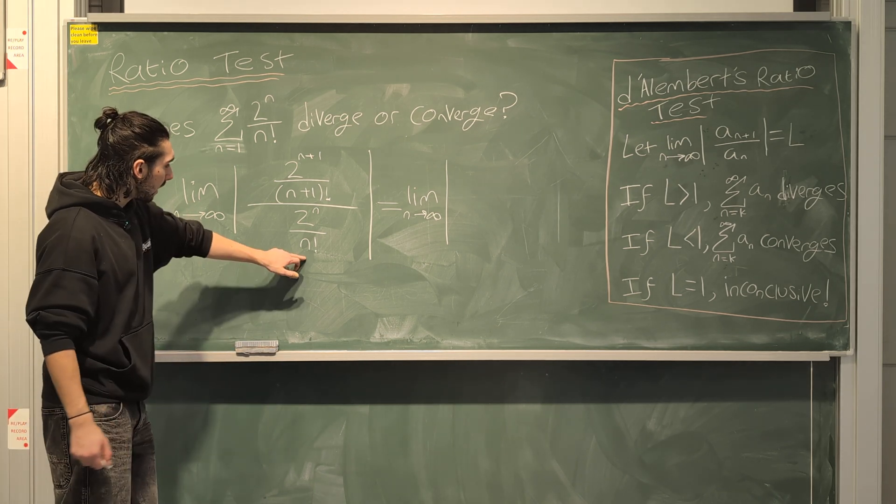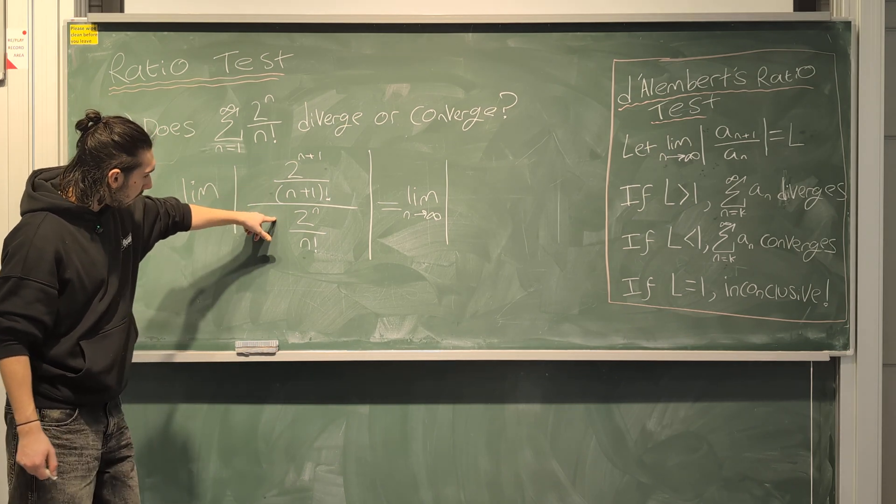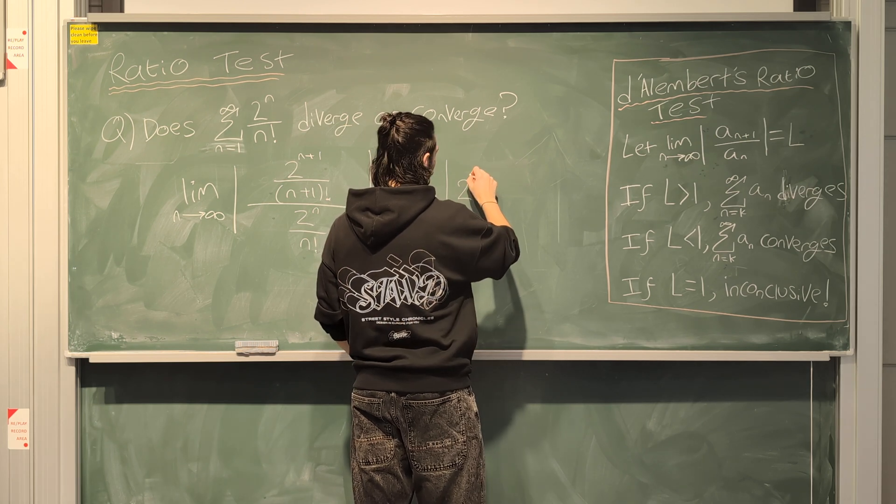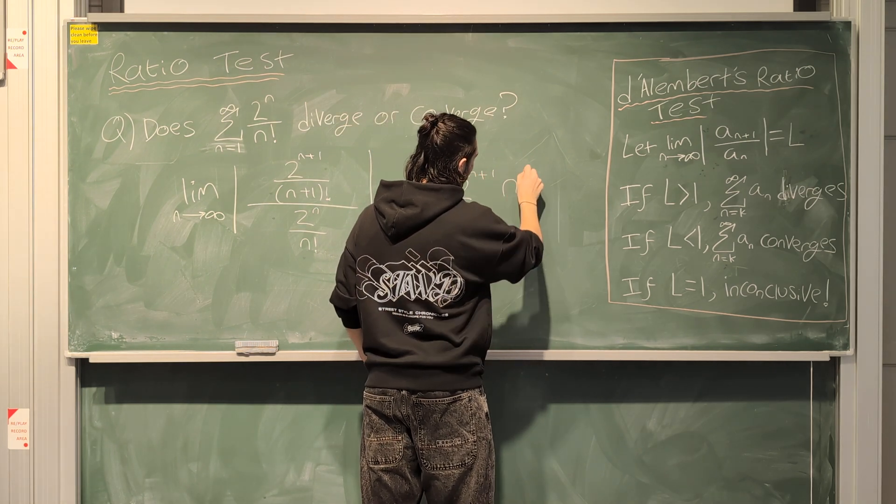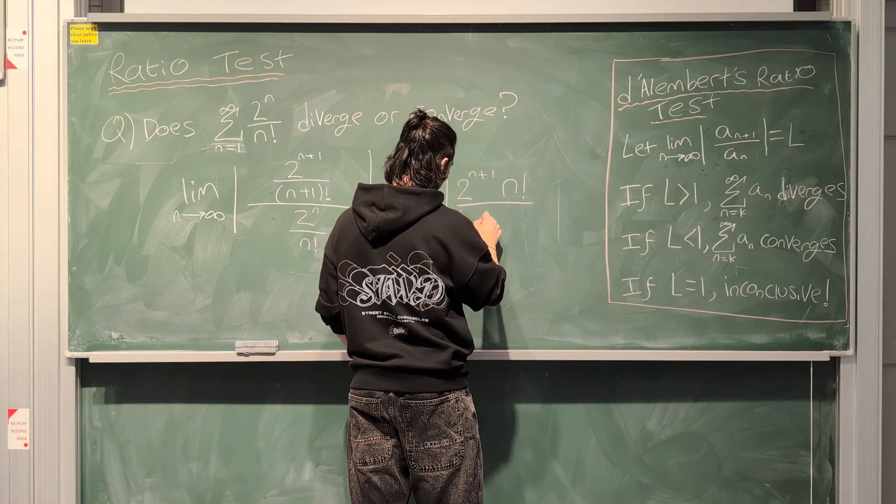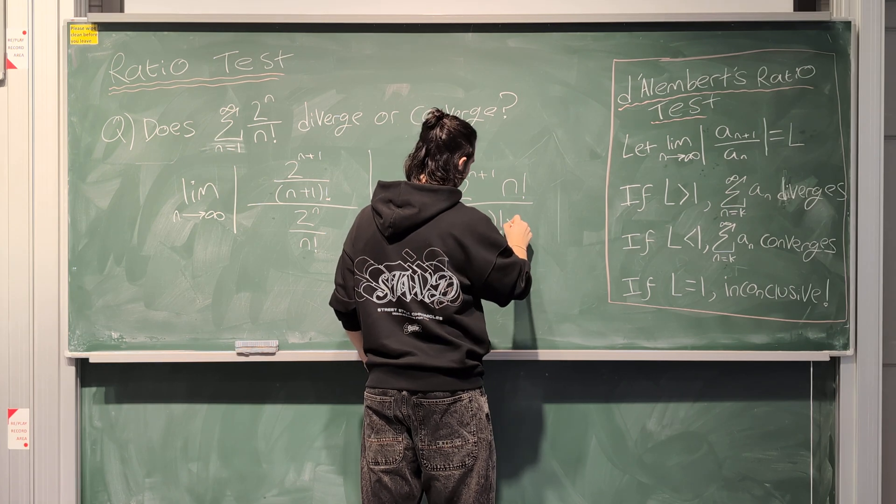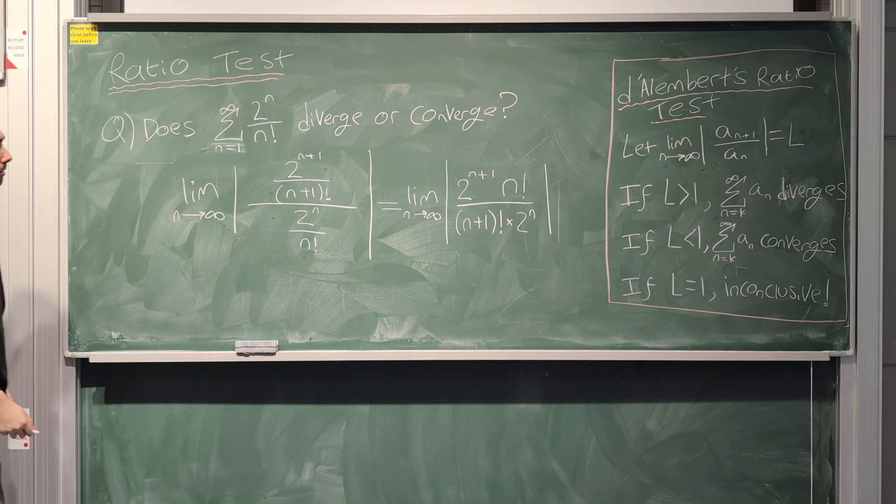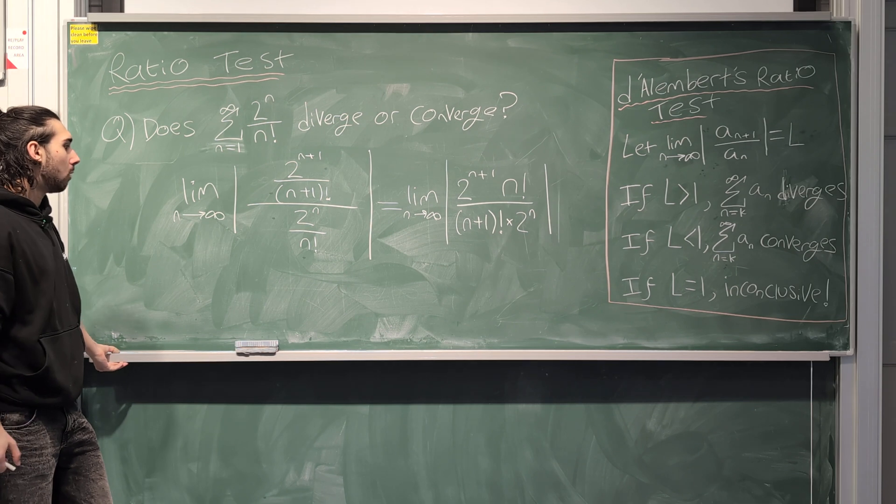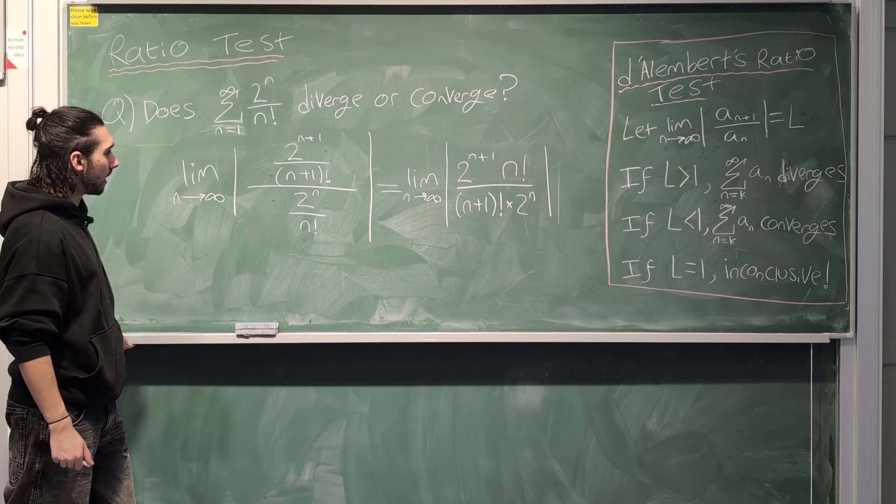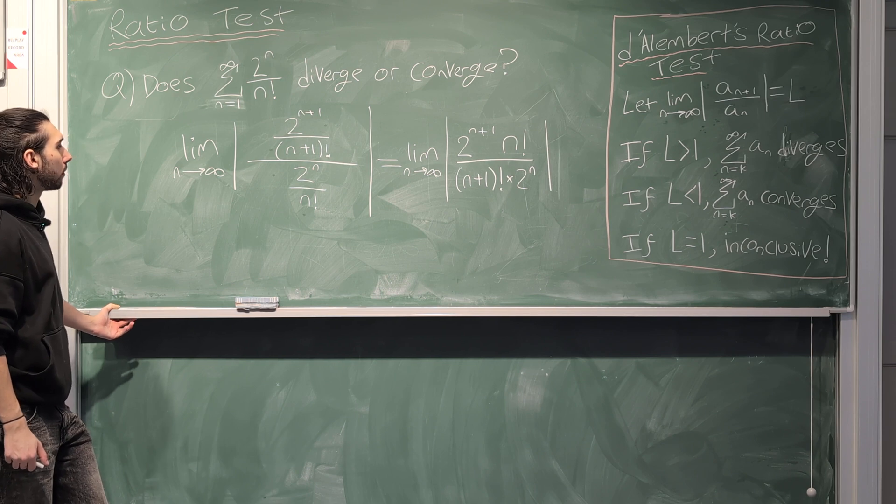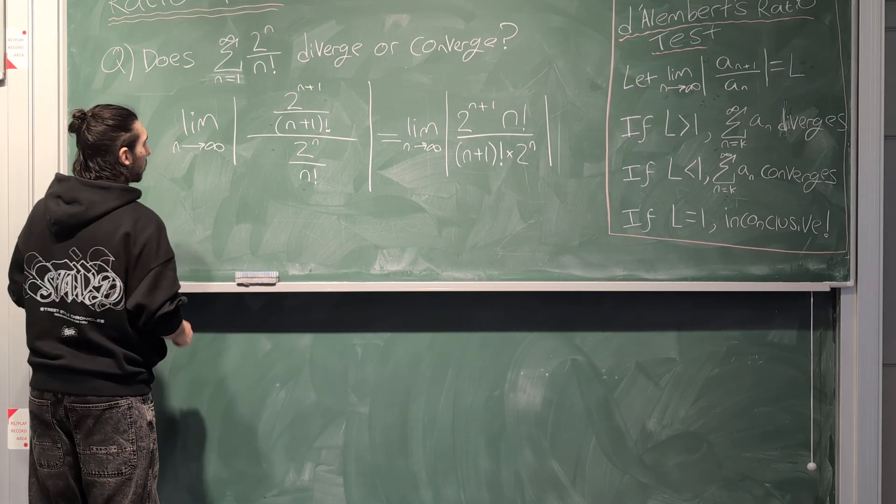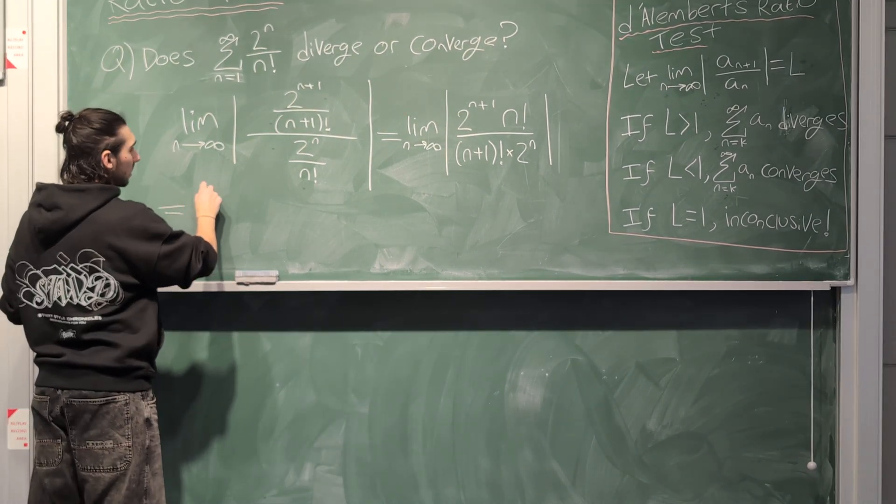How do we simplify this fraction? Well, what I would do is I would bring the n factorial up here, and I would bring the n plus 1 factorial down there. And I'm just going to write it, and then you can think in your head whether or not you're happy with what I have written. So I'm just doing that now. So just have a quick glance at that, and just make sure that you're really happy that this and this are the same thing. All I've done is I've multiplied the top and bottom of the main fraction by n factorial, and I've divided the top and bottom of the main fraction by 2 to the power of n.